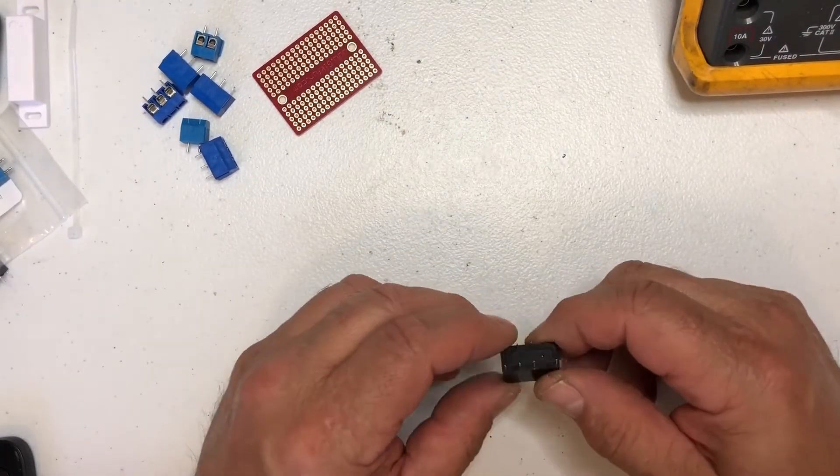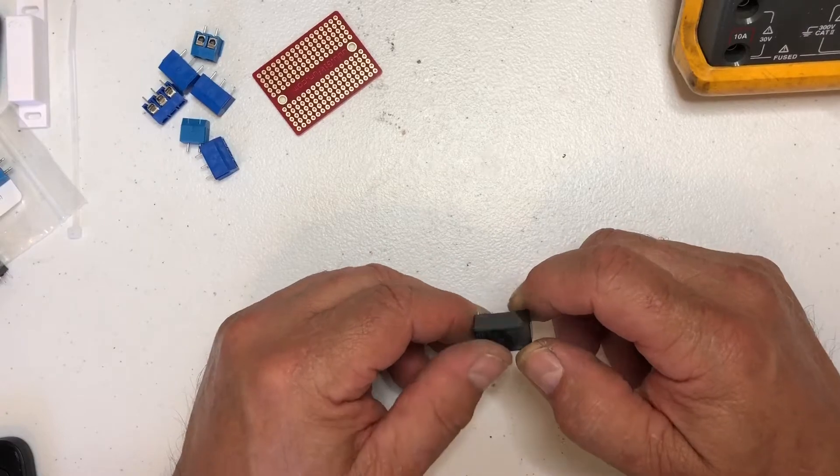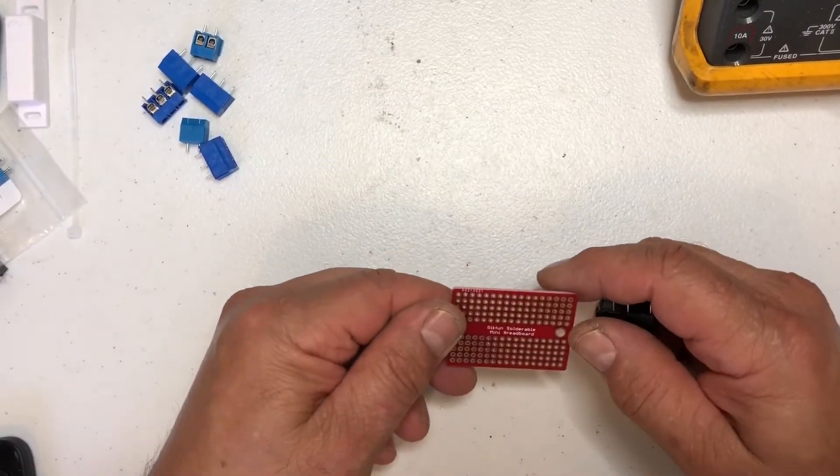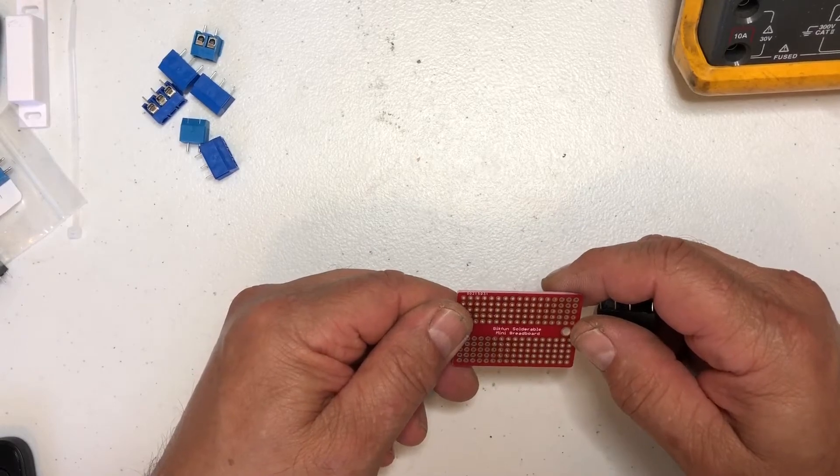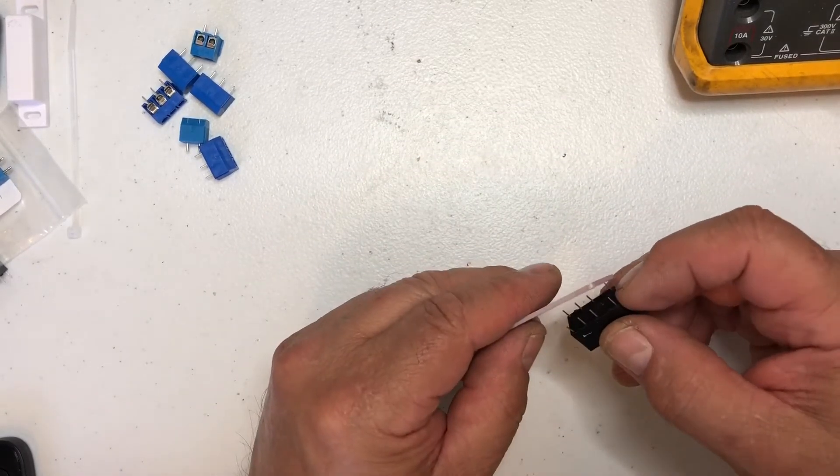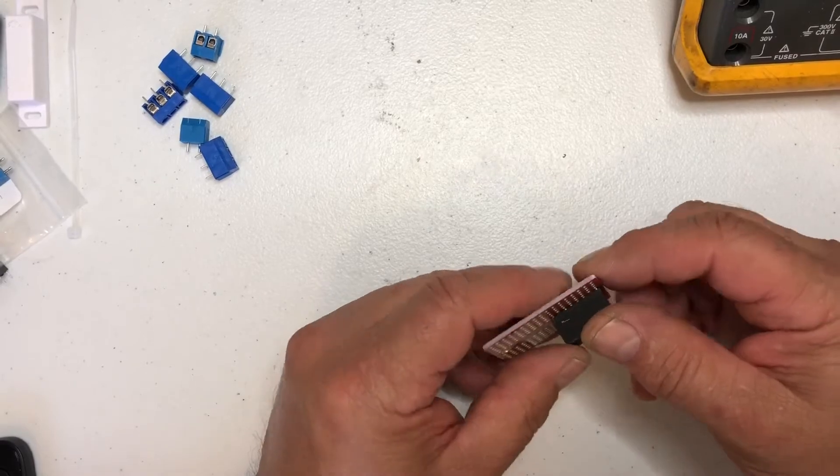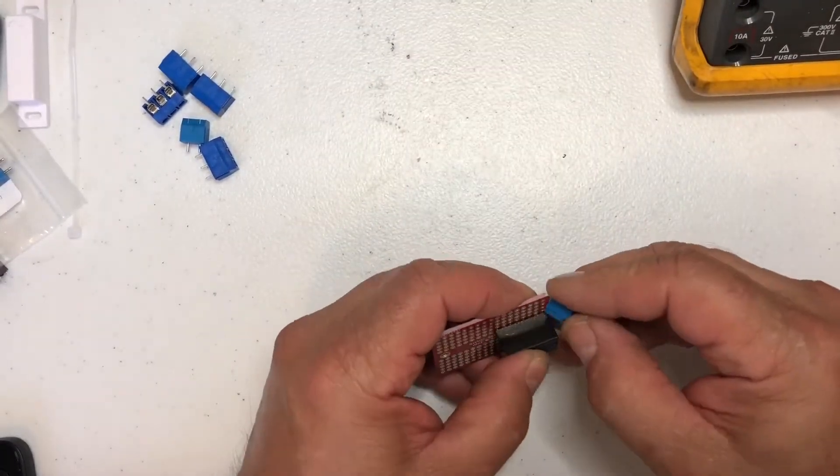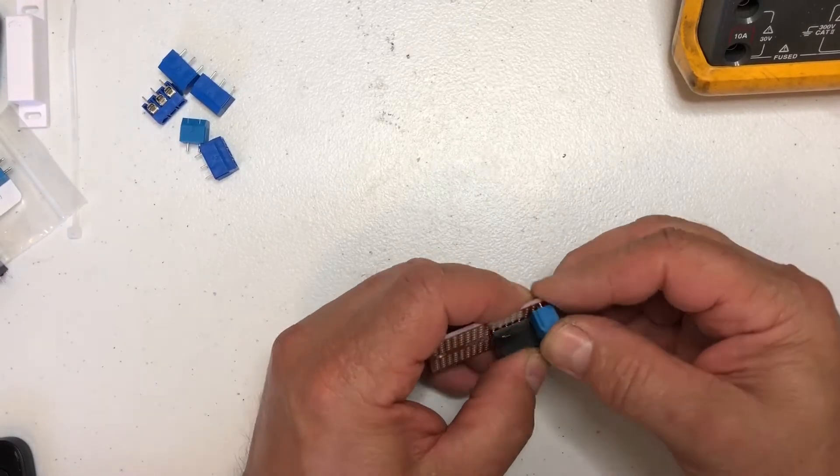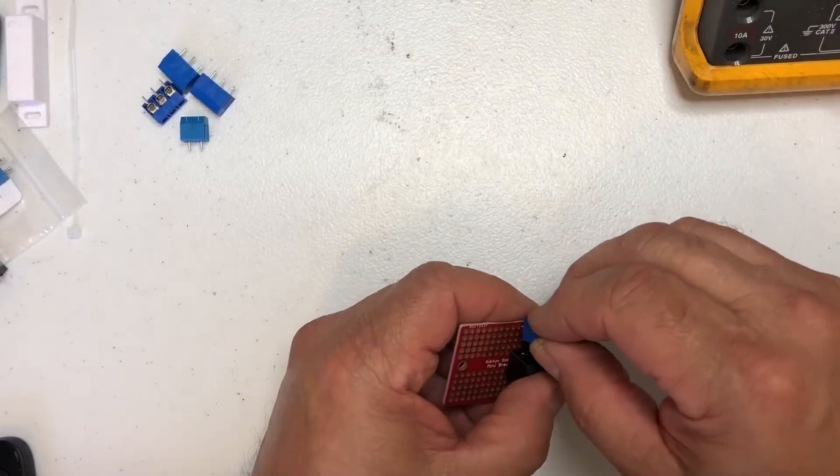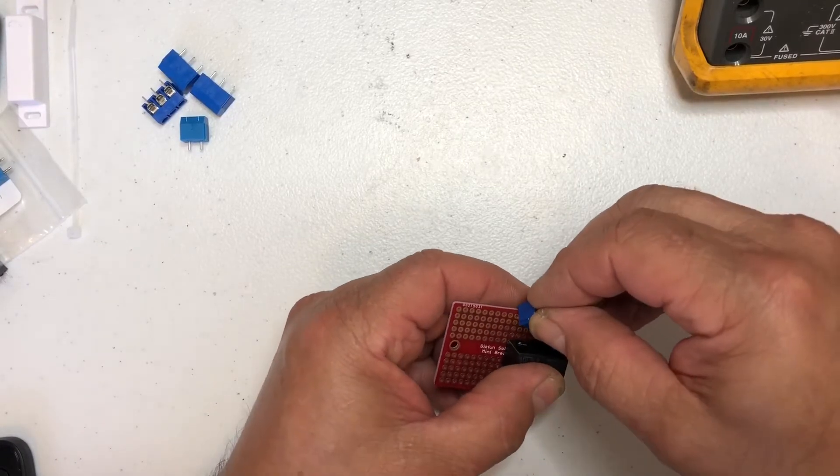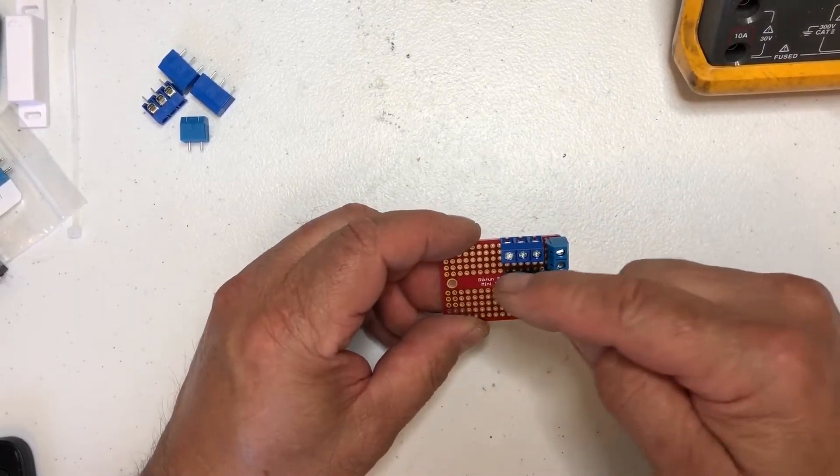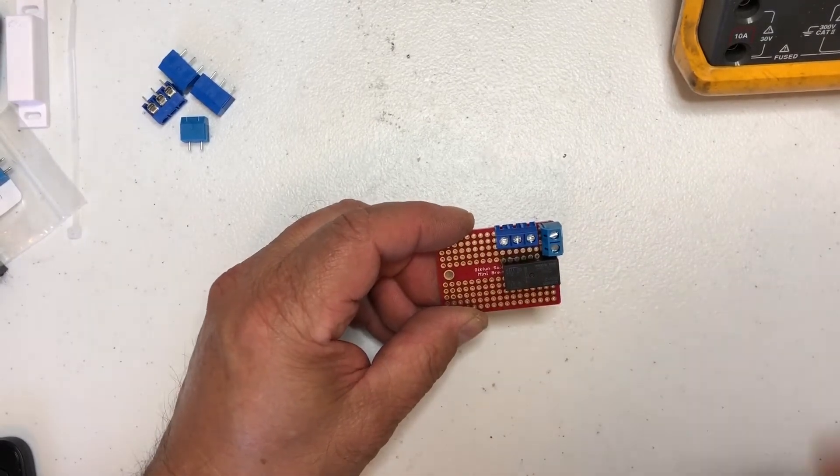So I found these relays here and I'm just gonna make my own mini breadboard, kind of like this, and that would control one side of the relay. It's a double pole double throw relay.